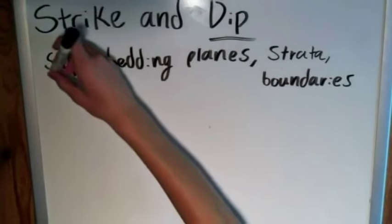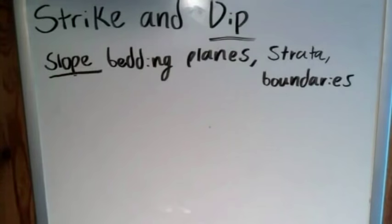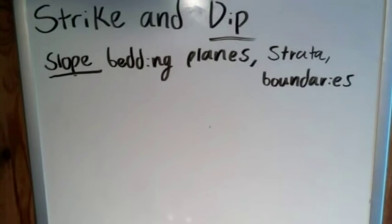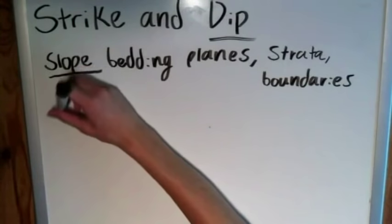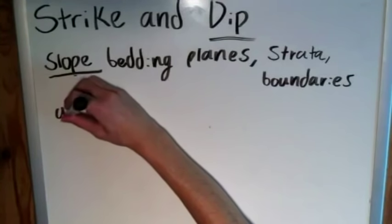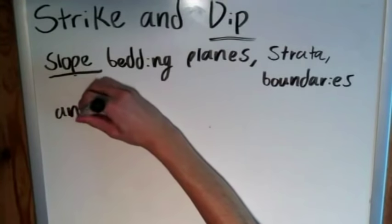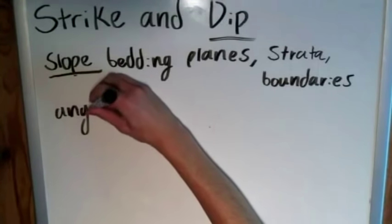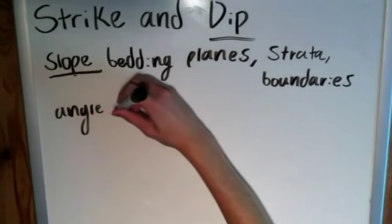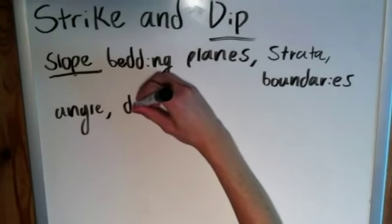So slope is the key word there. There are two components to dip, but they usually aren't represented as a vector — we discuss them separately. Those two components are angle and direction.